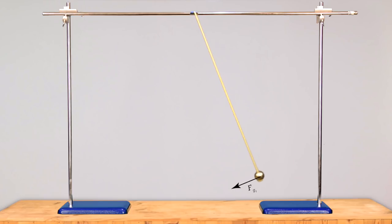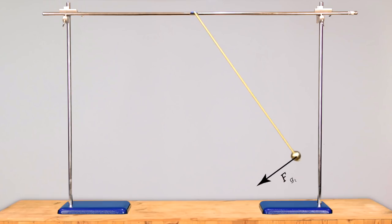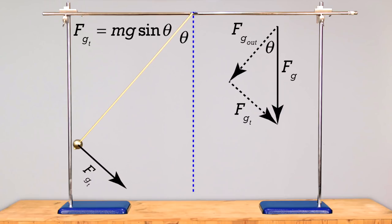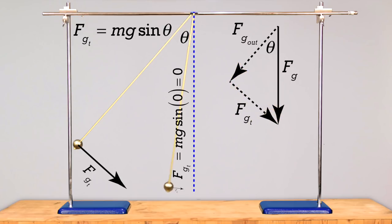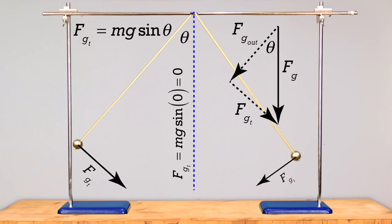This fits the criteria for a restoring force for simple harmonic motion because it is directed toward the equilibrium position and is proportional to the displacement from equilibrium position. The force of gravity tangential to the motion equals mass times acceleration due to gravity times the sine of the angle the pendulum makes with the vertical. When that angle is zero degrees, sine of the angle equals zero, and therefore the tangential force of gravity is also zero. As the angle increases, the force of gravity tangential increases — as the displacement from equilibrium position increases, the force increases.